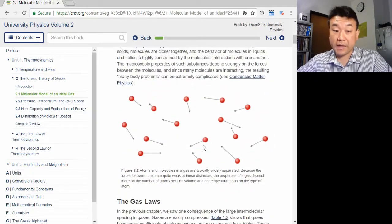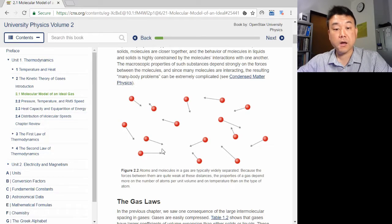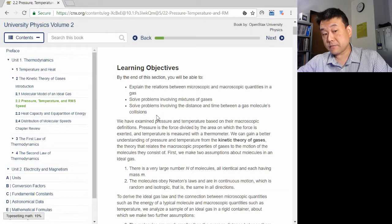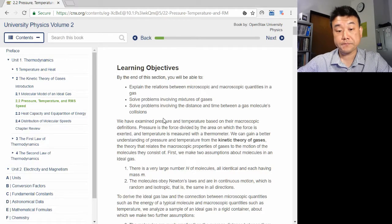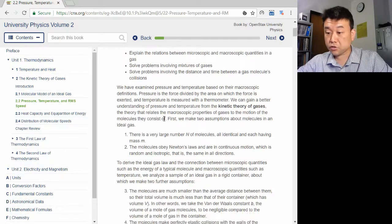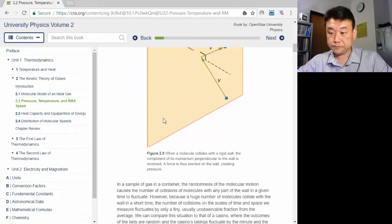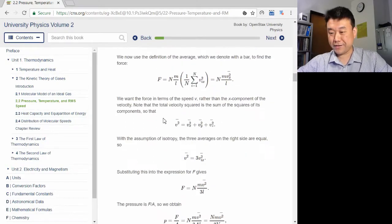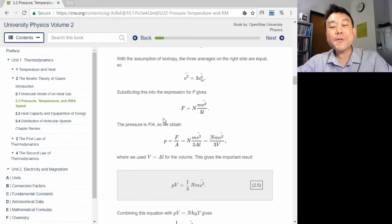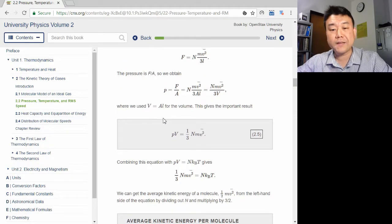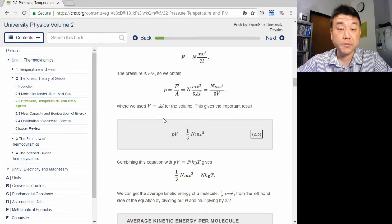It turns out we can derive the ideal gas law from first principles. And in the process, we can discover new meanings for the temperature. In your textbook, this derivation is done in section 2.2. It's this set of drawings and these equations you can read through. There will be a separate lecture video for this derivation in a very similar but slightly different approach as in section 2.2. But for this video,